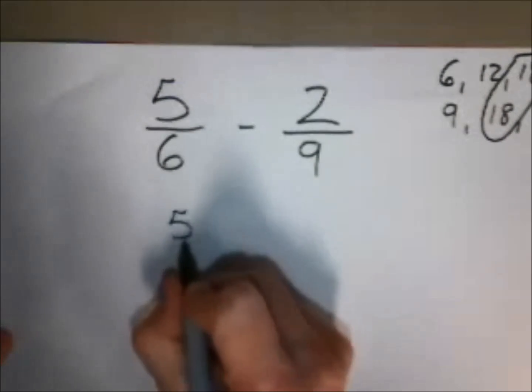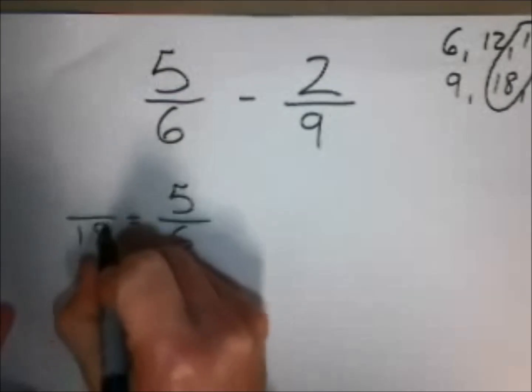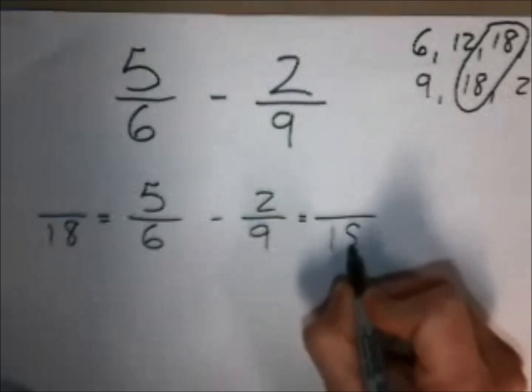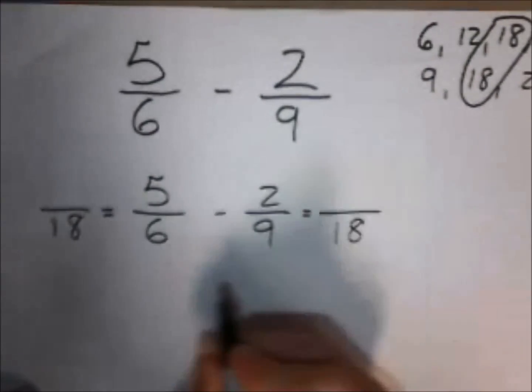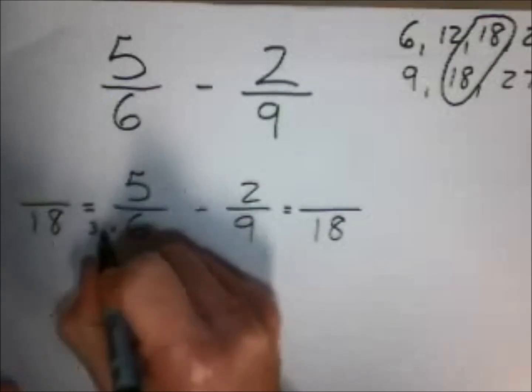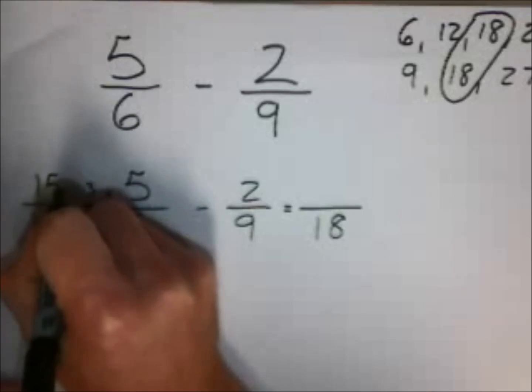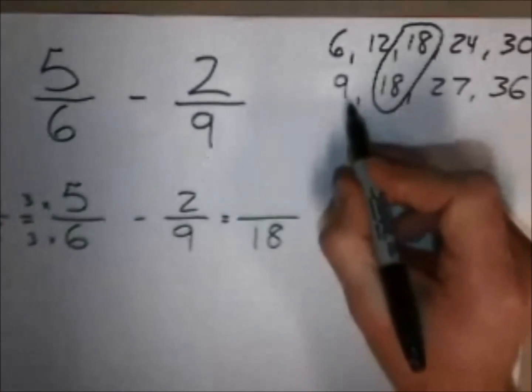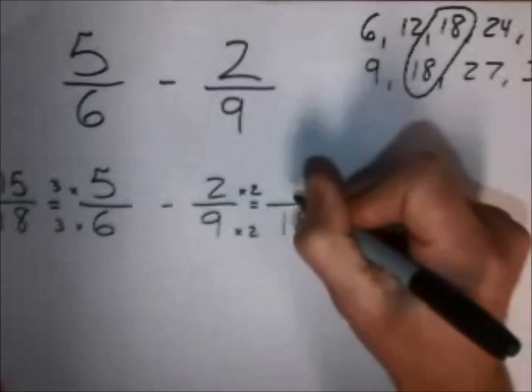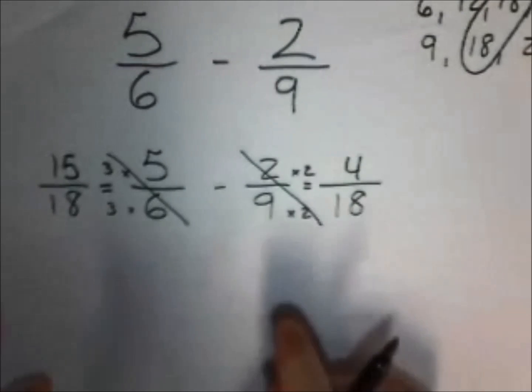I am going to make 5/6 into an equivalent fraction of something over 18, take away 2/9 as something over 18. To do this I need to count my factors. I got 6, 12, 18—times 3. 6 times 3 is 18, 5 times 3 is 15. Over here I have 9, 18—9 times 2 is 18, and then 2 times 2 is 4. We know we have equivalent fractions, and so now we have 15/18 take away 4/18.